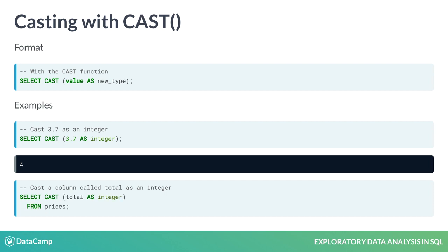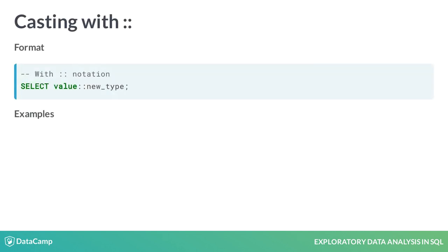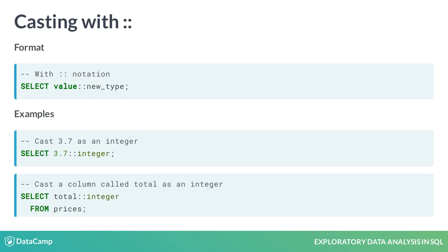To convert the type of an entire column, enter the name of the column as the value. Here, a column called total is converted to type integer. We need a FROM clause to specify which table the column comes from. There's an alternate notation for casting values: a double colon. It does the same thing as the cast function, but it's more compact. Put the value to convert before the double colon and the type to cast it as after the double colon. The examples here are the same as those on the previous slide, except with double colon notation instead of the cast function.